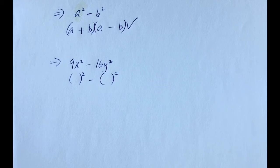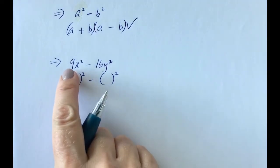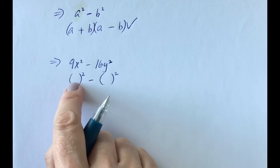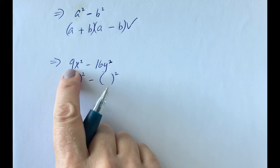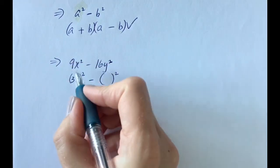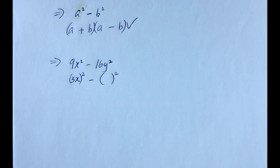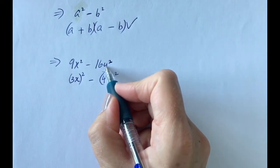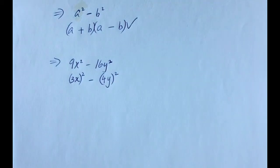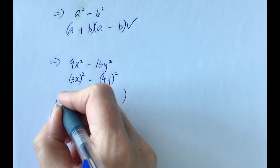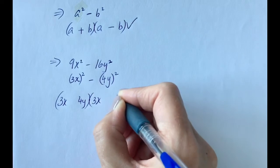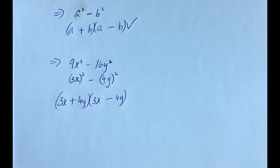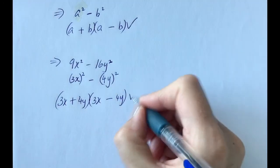For 9x squared, what must have been multiplied by itself? To get 9, the number is 3 — 3 times 3. And to get x squared, we multiply x by itself. So 3x all squared gives 9x squared. For 16, the square root is 4. And the square root of y squared is y. So we open up the brackets: 3x times 3x is 9x squared, and 4y times 4y is 16y squared. A plus and a minus must have been there for the middle term to cancel. That is the final answer.